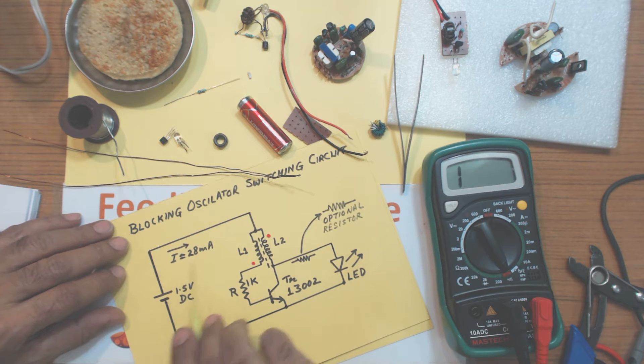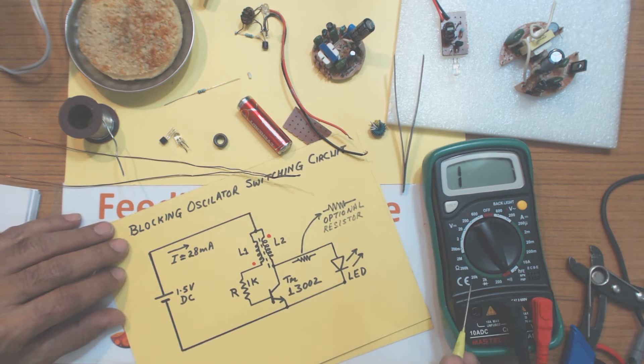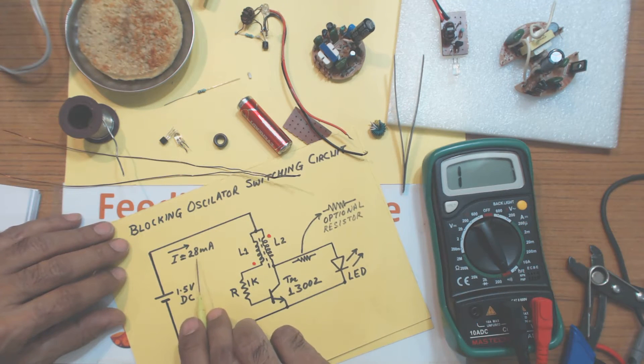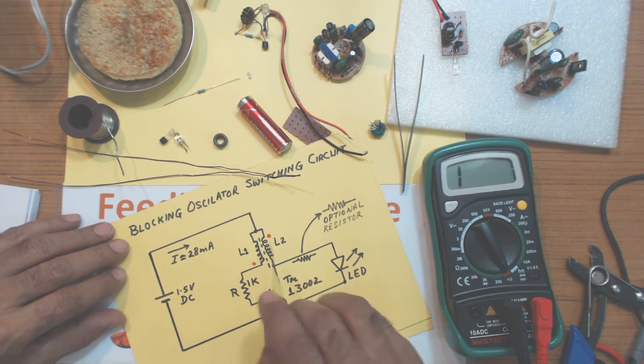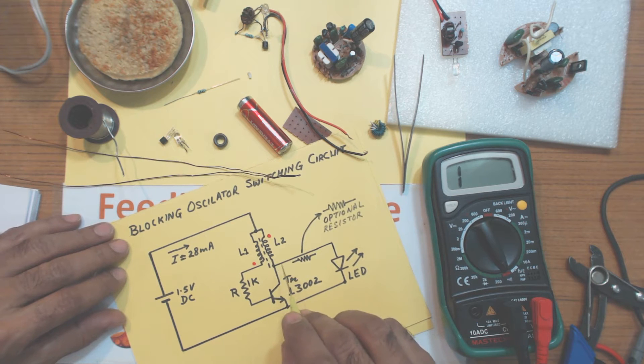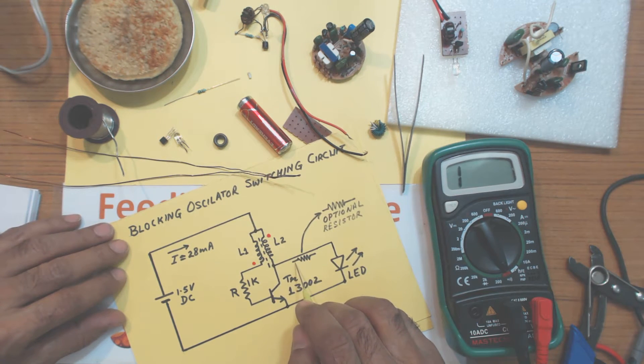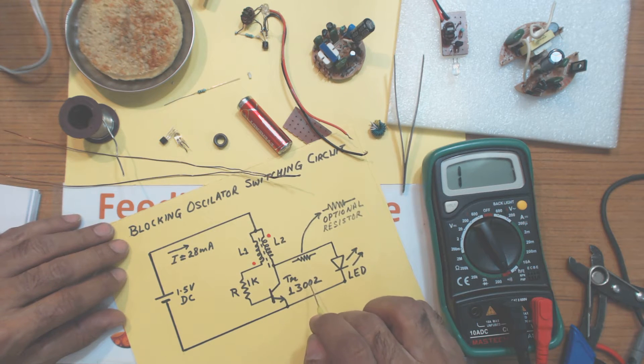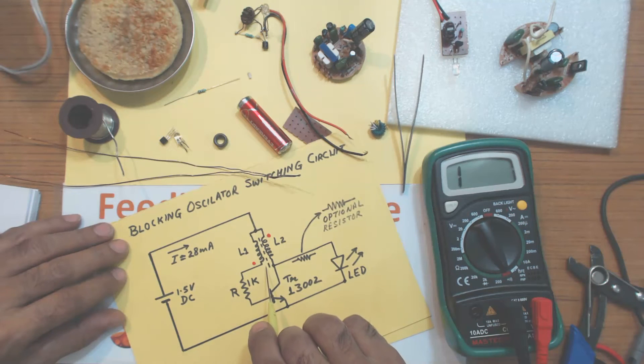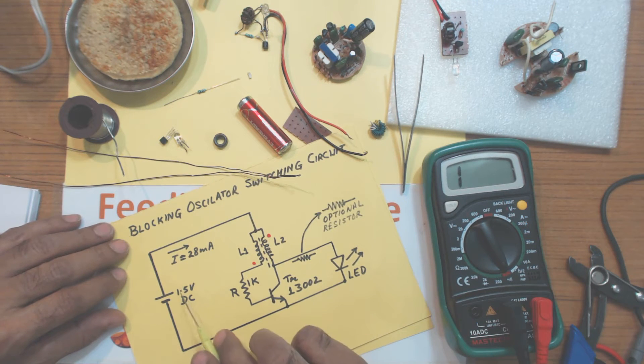And this circuit I have measured with the multimeter. It draws about 28 milliampere DC from the battery. But since the circuit gives an output, not a constant output, but through pulses of very high frequency, 40 or 50 kilohertz, this won't load your battery. So, it lasts long.